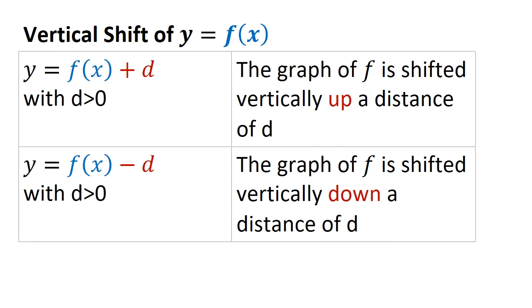The first translation or transformation I want to talk to you about is the vertical shift of the function f of x. So if we add d to f of x, remember this is outside the argument of the function. It's plus d or minus d, and it impacts the y coordinate. So you want to think to yourself, this is going to impact the y coordinate only, and it's outside the argument of the function. If it's plus d, it moves the function up a distance of d. If it's minus d, it moves the function down a distance of d. Let's have a look.